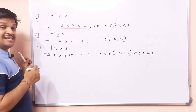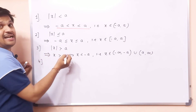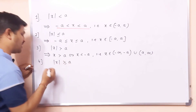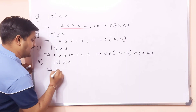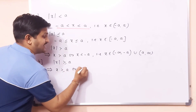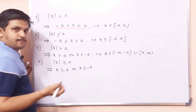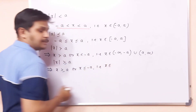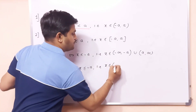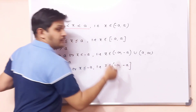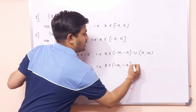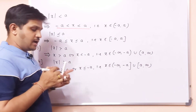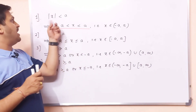Fourth case: |x| ≥ a implies x ≥ a or x ≤ −a. In interval notation, x belongs to (−∞, −a] union [a, +∞) — closed intervals since we include the endpoints. These are the four standard inequalities with respect to the absolute value of real numbers.